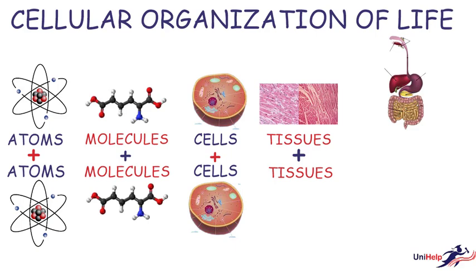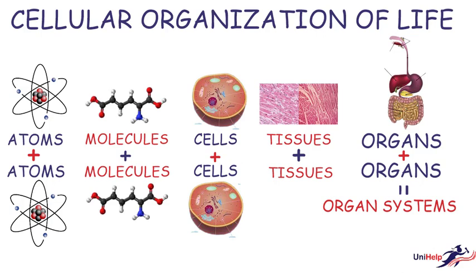These organs can also combine to form organ systems — another level in the hierarchy of organization. These organ systems perform very distinct functions. For example, all the organs on screen together form the digestive system, which performs the function of digestion in the human body. There are about 11 unique systems in the human body, each performing their unique functions.